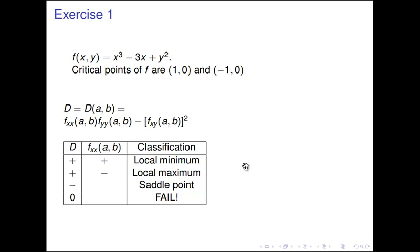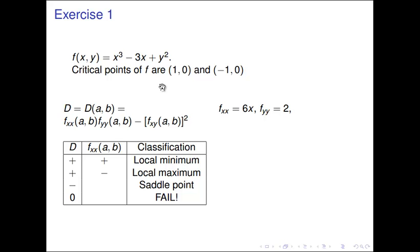Let's compute these second partial derivatives. Taking two partial derivatives in the x direction gives us 6x. The yy partial gives us 2. And the xy partial gives us 0.